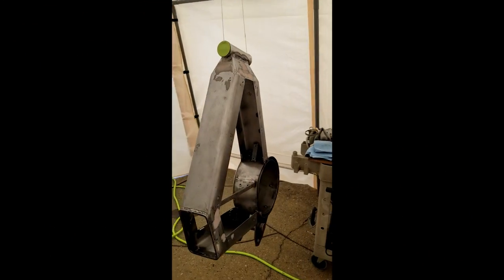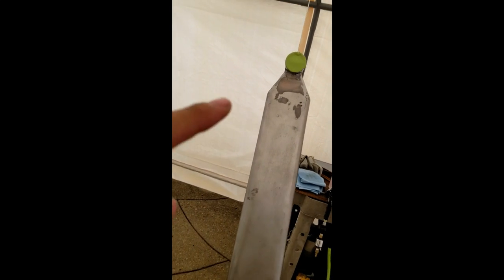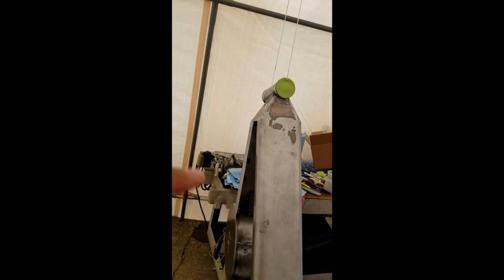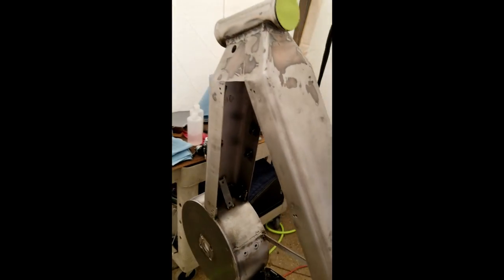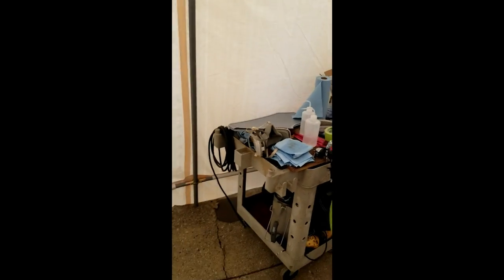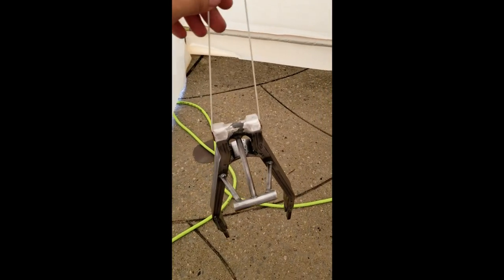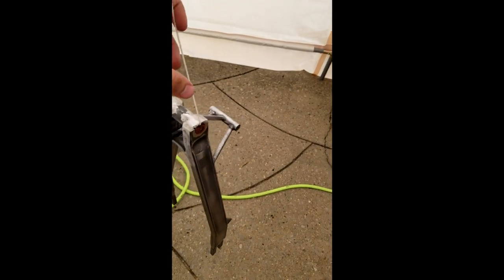Alright guys. So I got them sanded. A little bondo for where the welds were. I taped it up. Wax and grease removed it. Put a little scotch brite in.